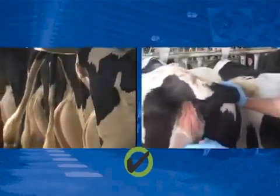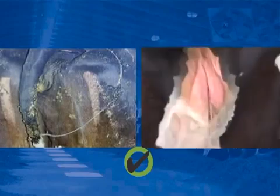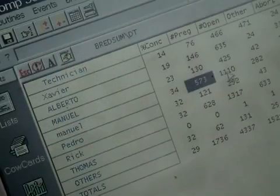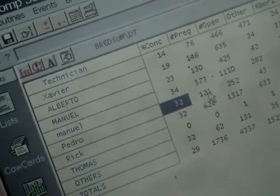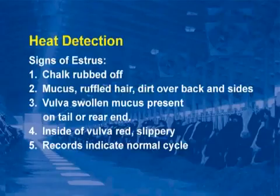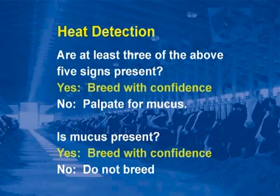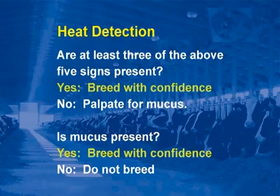Signs of estrus: tail chalk rubbed off, mucus, ruffled hair, vulva swollen, mucus present on tail or on the rear flanks, inside of the vulva is red and slippery, and records indicate she is in a normal heat cycle. All of the above signs are equally important; however, none is foolproof. Are at least three of the above five signs present? Yes — then breed with confidence. No — then palpate for mucus. Is mucus present? Yes — breed with confidence.